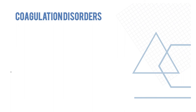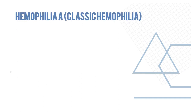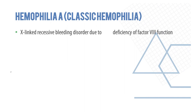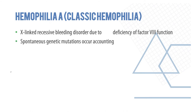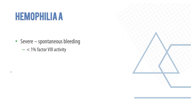Now let's look at important coagulation disorders: hemophilia A, hemophilia B, disseminated intravascular coagulation, von Willebrand's disease, and medication toxicity. Hemophilia A, also called classic hemophilia, is caused by factor 8 deficiency. It is an X-linked recessive disorder; spontaneous genetic mutations account for one-third of new cases. Severity depends on factor 8 levels: severe is spontaneous bleeding with factor 8 less than 1%.